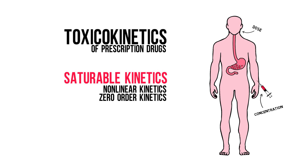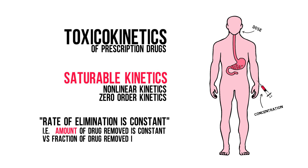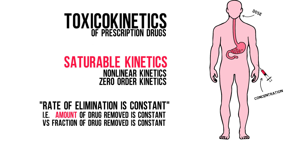This means that the rate of elimination is constant and does not depend on the drug concentration. Whereas in normal pharmacokinetics, i.e. first-order kinetics or linear kinetics, the fraction of the drug eliminated is constant but the amount changes with drug concentration, as explained in my video on clearance and half-life. And yes, there are drugs with zero-order kinetics at therapeutic doses, but that's not for this video.